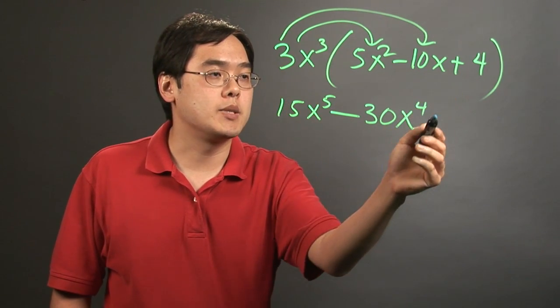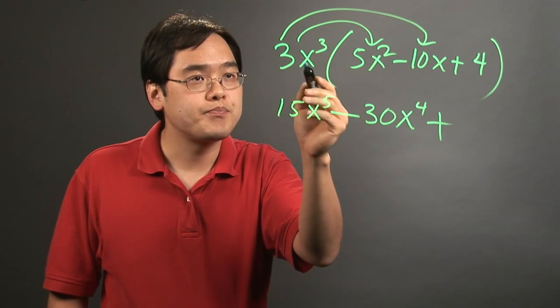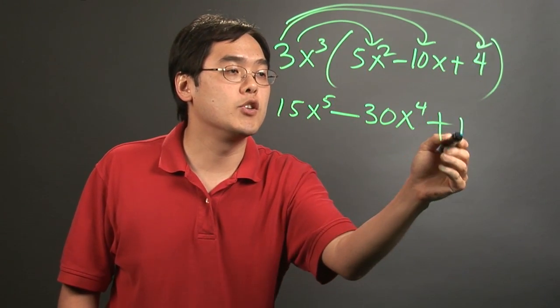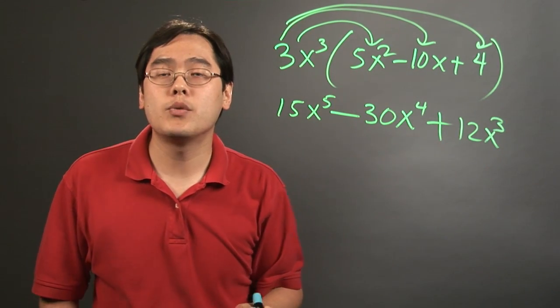Now, positive times a positive is a positive. So 3x cubed times 4, multiply the 3 and the 4, that's going to give you 12. And then the x cubed is just kind of along for the ride here.